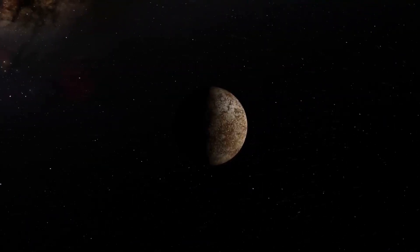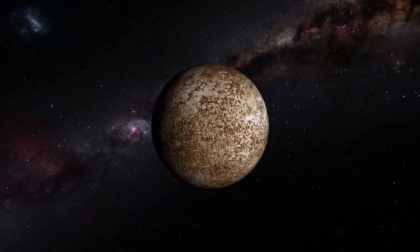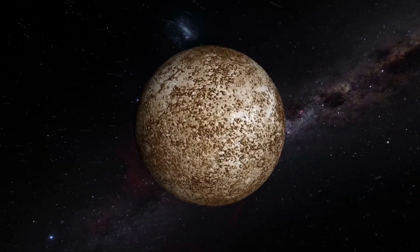Mercury is the closest planet to the sun and has a slow rotation. It takes 59 Earth days for Mercury to complete one rotation.